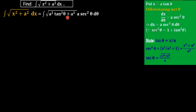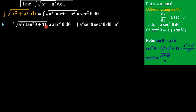Then x squared is a squared tan squared theta plus a squared. The value of dx is a sec squared theta dθ. We are taking x equal to a tan theta because by taking a squared outside, we will get tan squared theta plus 1. What is tan squared theta plus 1? That is sec squared theta. And in this step, we can take a squared sec squared theta outside of the square root, giving us a sec theta. Then a sec theta into sec squared theta will give sec cubed theta, and a times a will give a squared. So we get a squared sec cubed theta.